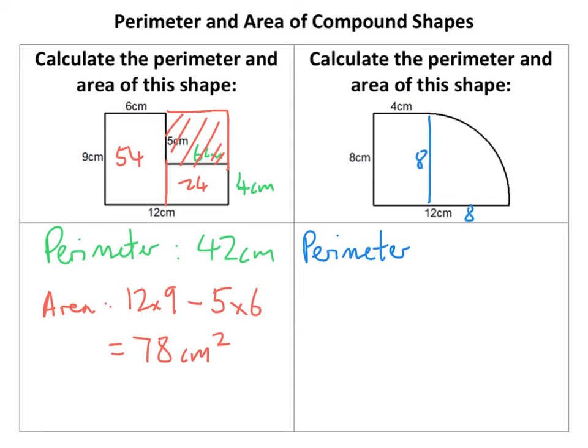So you add on your straight bits, you've got your 4 plus 8 plus 4, okay, plus now you know the circumference of the, circumference of a circle is πd or 2πr, right?